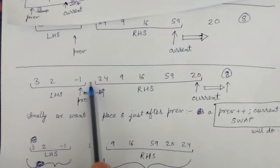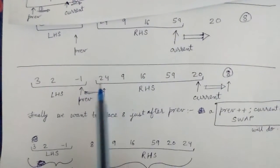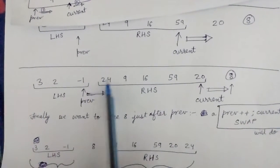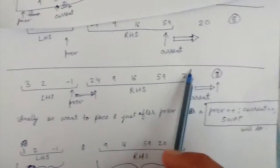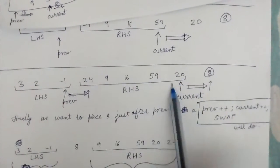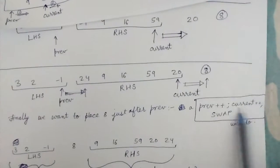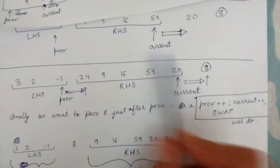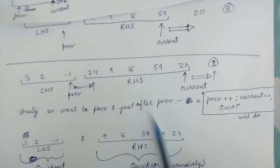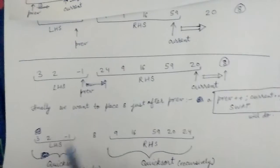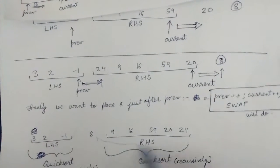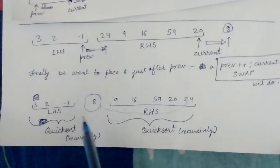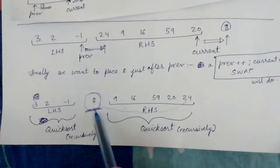Finally we have reached the pivot element. We want to place the pivot element between LHS and RHS. We increment prev — prev plus plus — and we swap prev and current, so 24 comes here and 8 comes here. Now 8 is sitting in the middle of LHS and RHS — it is sitting in its correct sorted position.